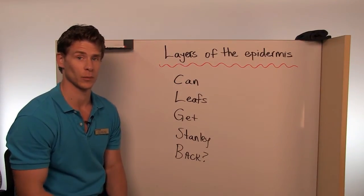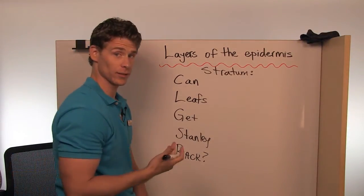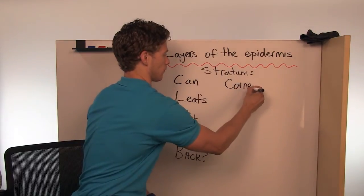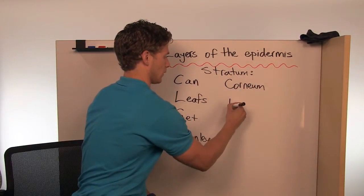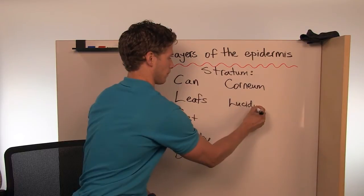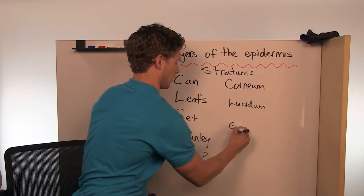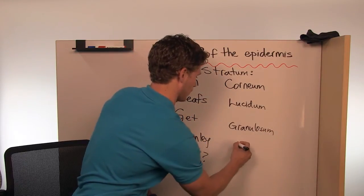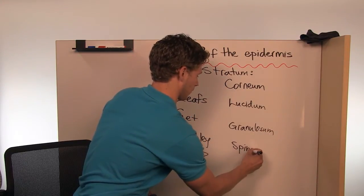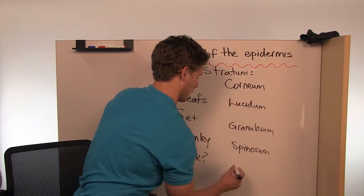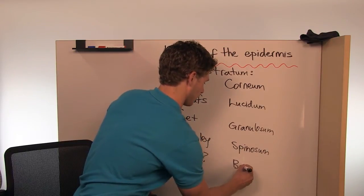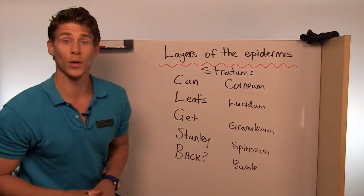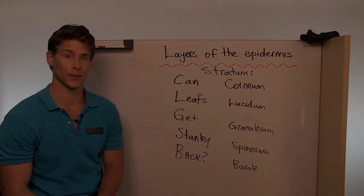It is actually encouraged to make your own mnemonics because it will help you remember them better. So these are the different layers — stratum corneum, lucidum, granulosum, spinosum, and finally basale. That is just one way to remember the five different layers of the epidermis.